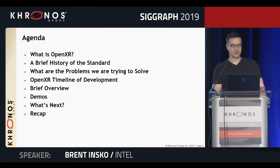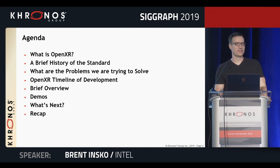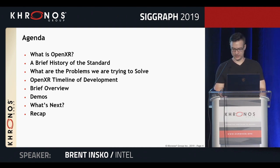Today I'll cover what OpenXR is, give a brief history of its development, cover the problems we're trying to solve, and where we are in the timeline. Then we'll jump into a brief overview of the OpenXR API, step aside for demos from Vario and Microsoft, and then I'll come back and talk about what's next and conclude the talk.